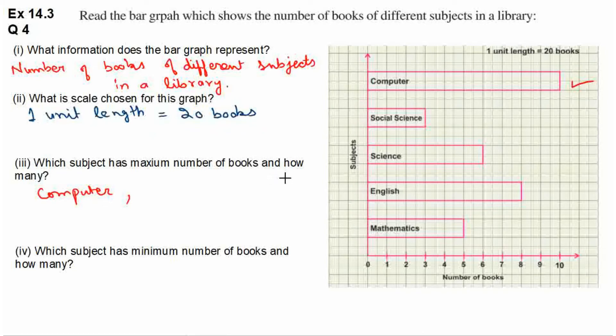Ab hum dekhenge ki computer ki kitne books hai. So computer ka jo bar hai woh yahaan horizontal line pe 10 ki marking ko point kar raha hai. So yahaan par horizontal line pe 1 ki marking represent karti hai 20 books ko. Because 1 unit length is equal to 20 books. So 10 ki marking kitne number of books ko represent karegi? 10 multiply by 20. So that means 10 ki marking represent karegi 200 books ko. Thik hai. So yahaan par hum likh denge 200 books.